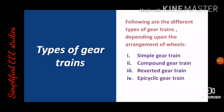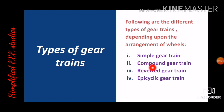What are the types of gear trains? Depending on the arrangement of wheels and the position of the shaft, gear trains can be classified as follows: first, simple gear train; second, compound gear train; third, reverted gear train; and finally, epicyclic gear train.